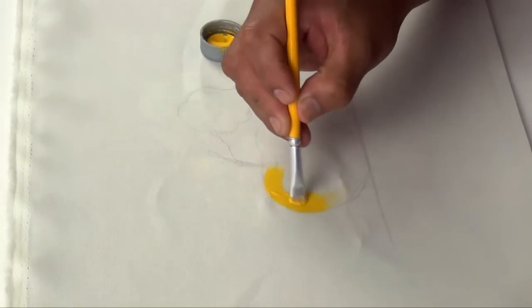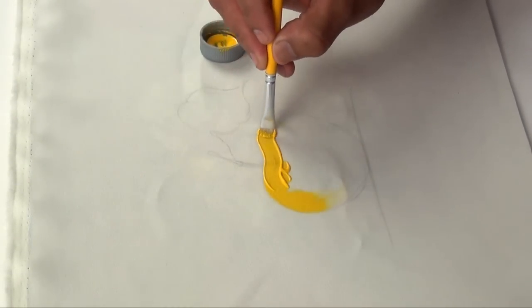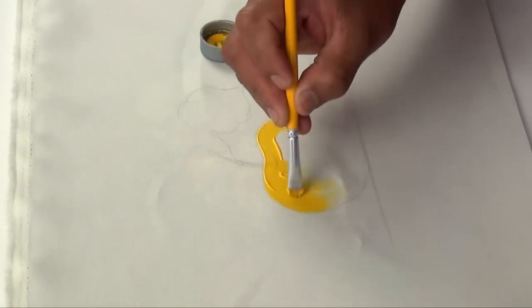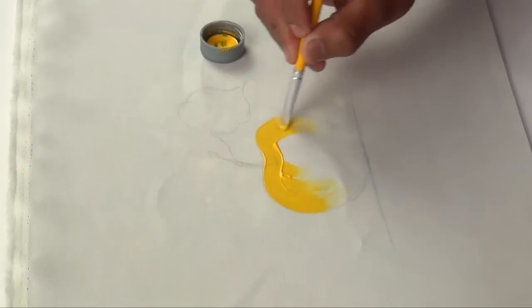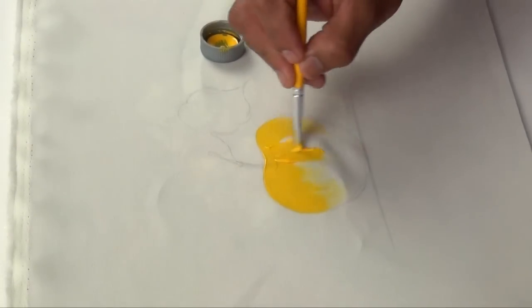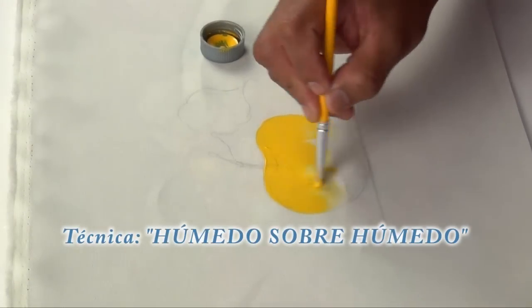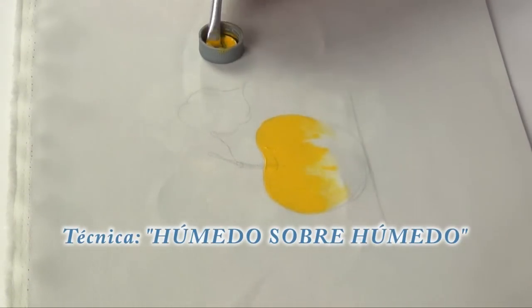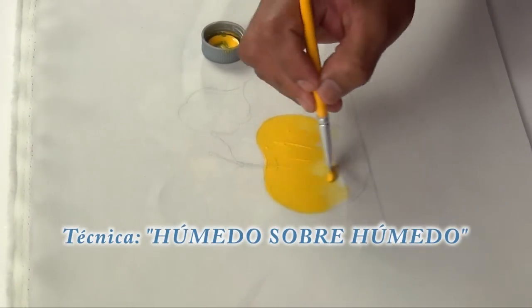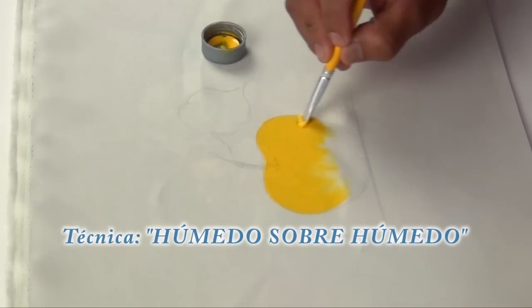We're going to start painting the apple. We'll work with gold yellow and paint the entire edge of the apple, the entire edge of the upper part. We work with gold yellow, applying the paint well loaded, very wet. As you know, fabric painting uses the wet-on-wet technique. While the color stays wet on the fabric base, the colors we put on top will blend.